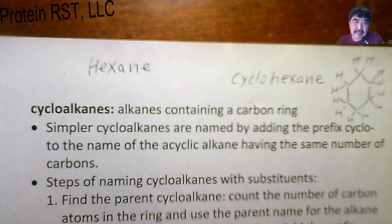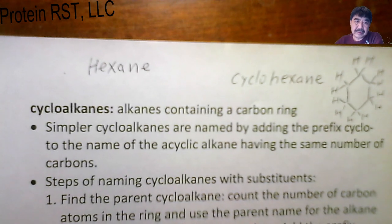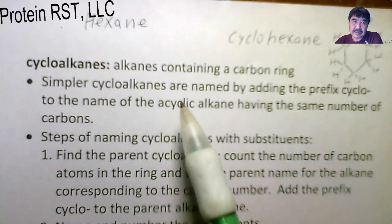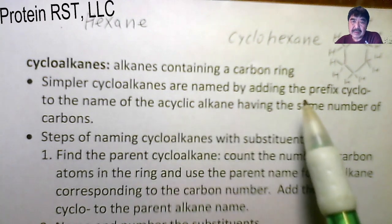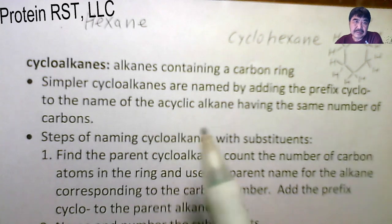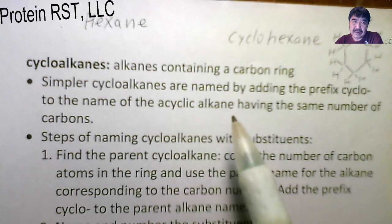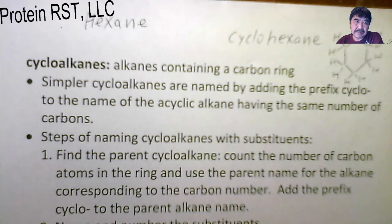Then let's take a look at the cycloalkanes. Alkanes contain carbon rings. Simple cycloalkanes are named by adding the prefix cyclo- to the name of the acyclic alkane having the same number of carbons.